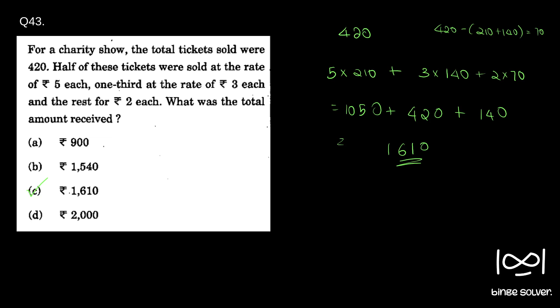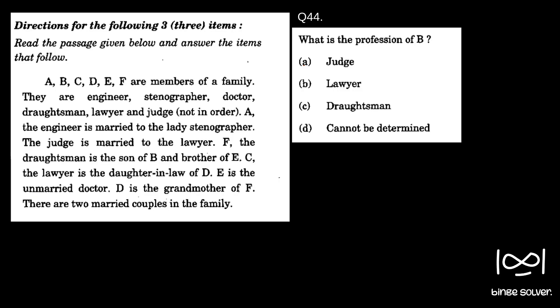Moving on to the next question, question 44. Direction for the following three items. Read the passage given below and answer the items that follow. A, B, C, D, E, F are members of a family.